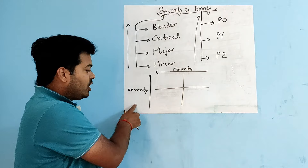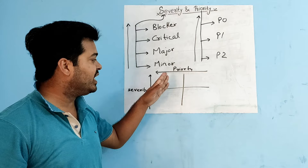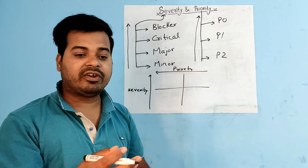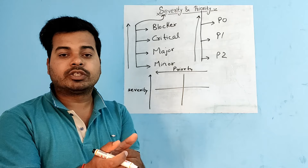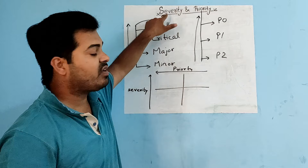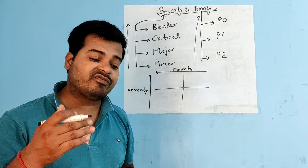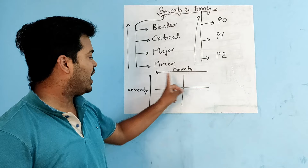Example of high severity and high priority: you are logging into the application and it takes you to a blank page — login itself is not working. This is a blocker severity bug. The priority will be P0 because you want the developer to fix it immediately.